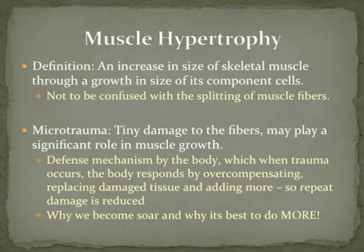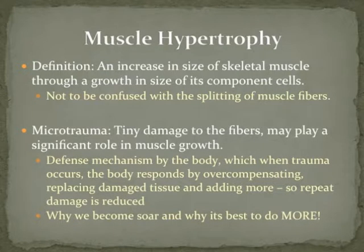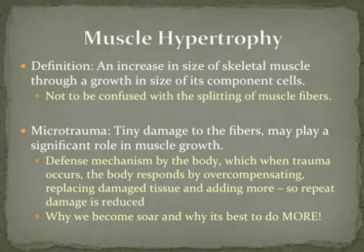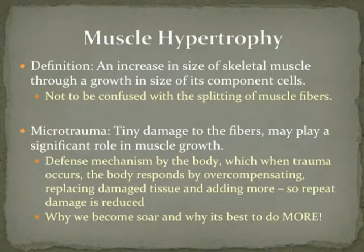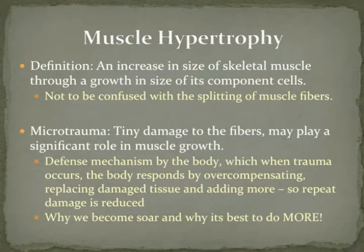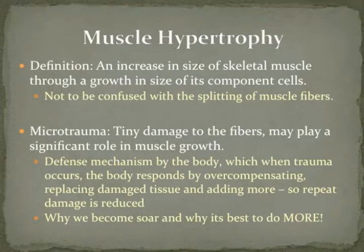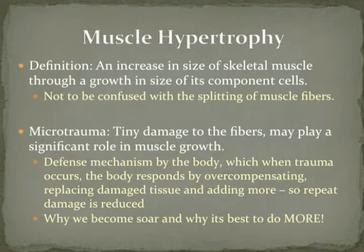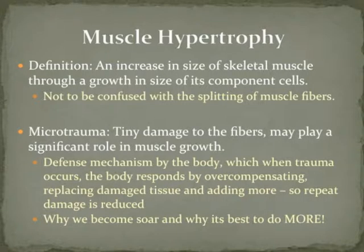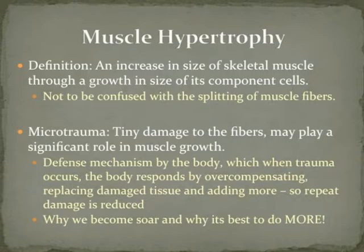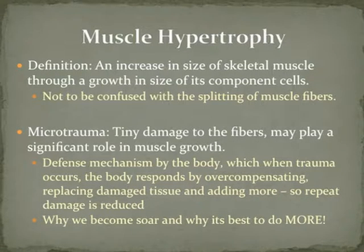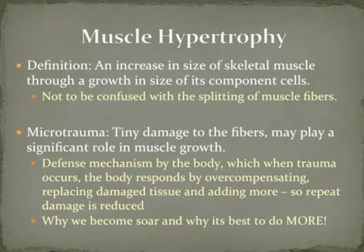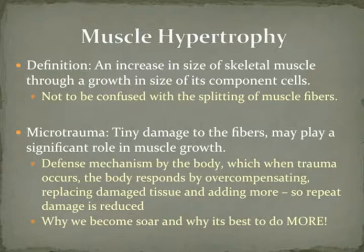Through continuous contraction, muscles hypertrophy — basically the increase in size of their cells or the components of the muscle belly. The myofibril, the smallest part of the belly, can only get to a certain size and then it starts to split. It's actually just the increase in size of the component's cell. One of the primary principles is microtrauma, where there's damage to the fibers because of resistance training. The body tries to defend against it by replacing the damaged tissue and adding more to it so further damage is reduced. This is why we become sore — we have delayed onset of muscle soreness, and why it's best to do more exercise to these muscles to help eliminate soreness.